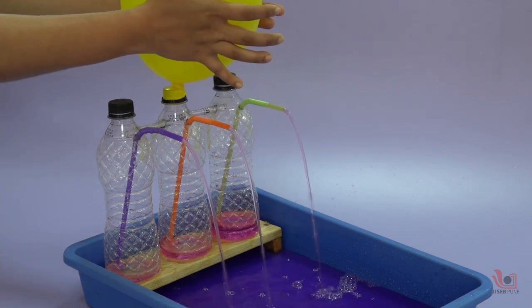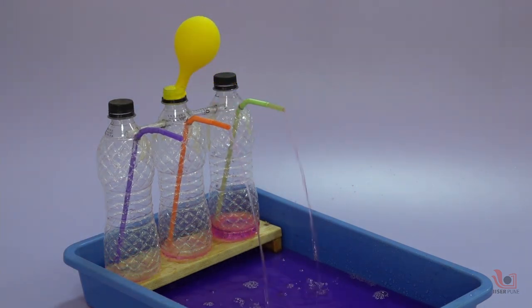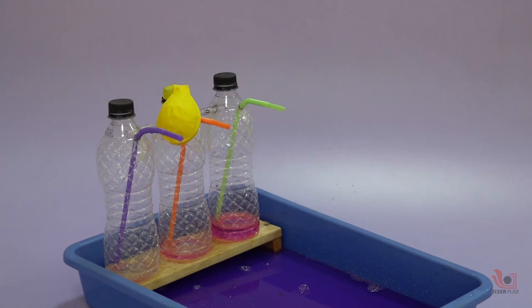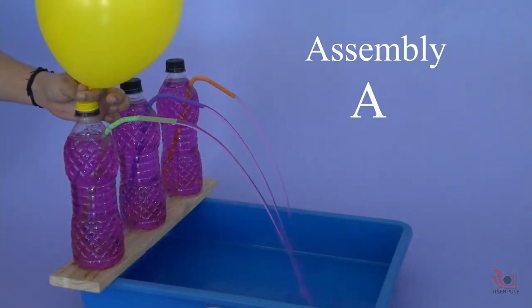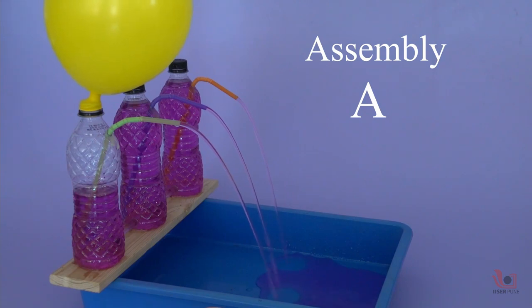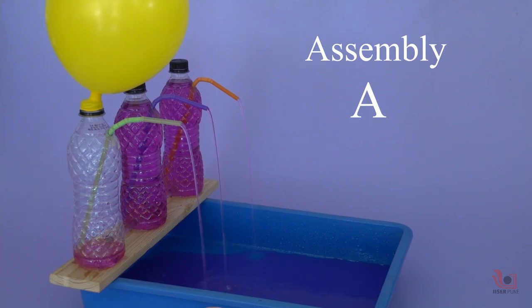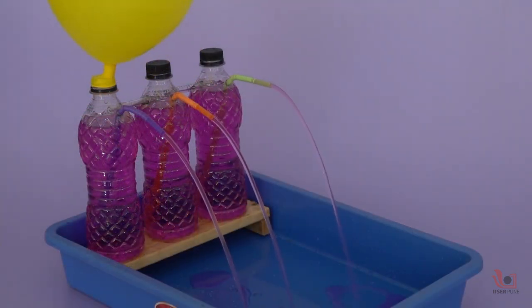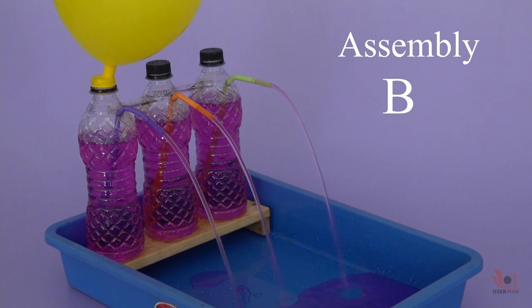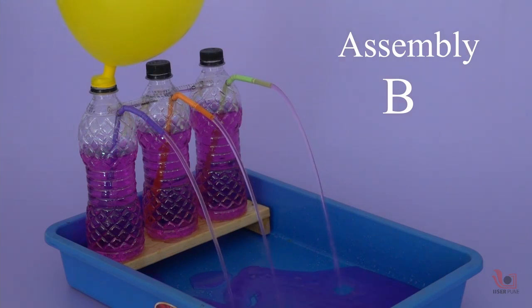Here, either water or air can transfer from one bottle to another bottle. In the three bottle assembly named A, because we fix the pipe at the bottom of the bottles, water goes from one bottle to another bottle. Here, as in the assembly named B, air can go from one bottle to another bottle.